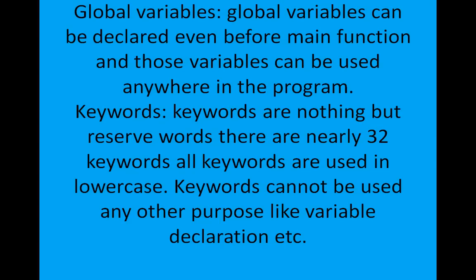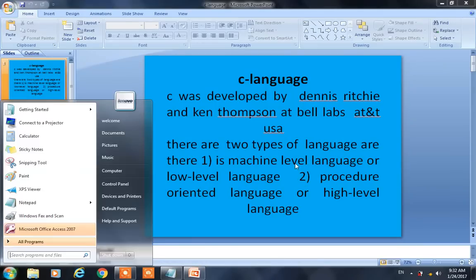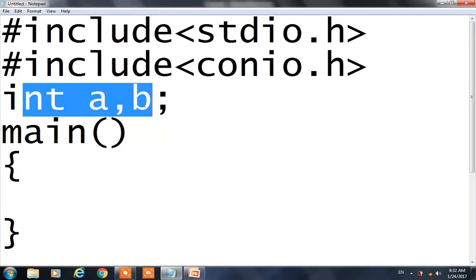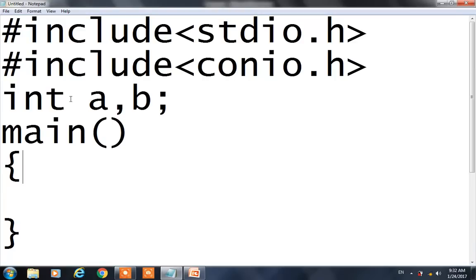Keywords are reserved words — there are nearly 32 keywords, all in lowercase. Keywords cannot be used for variable declaration or any other purpose. Global variables are declared before the main function using keywords like int; for example, int a, b declared before main are global variables.